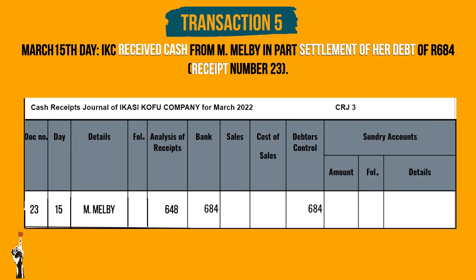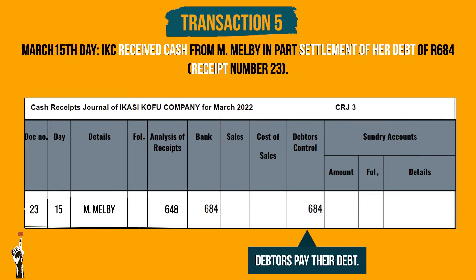In case you didn't get it: the debtors control column should be recorded as the debtor M Malby settling their debt.